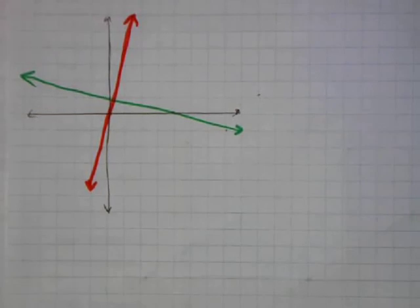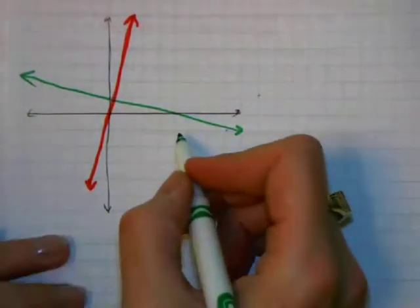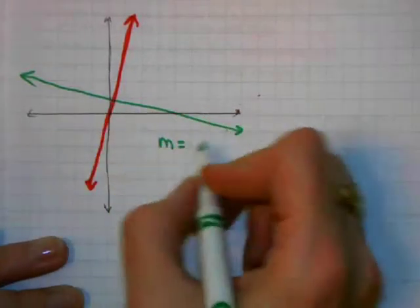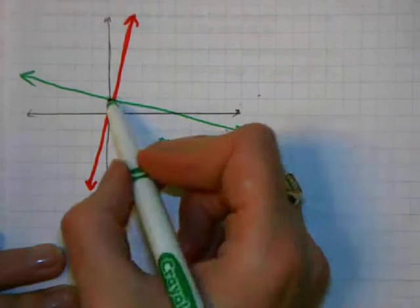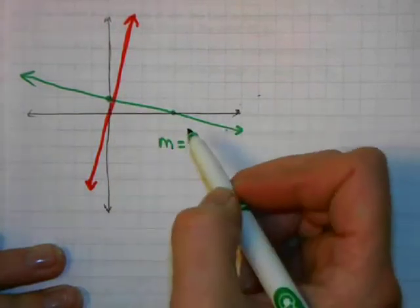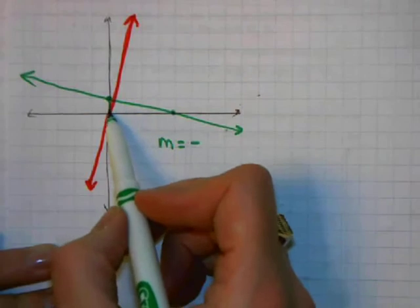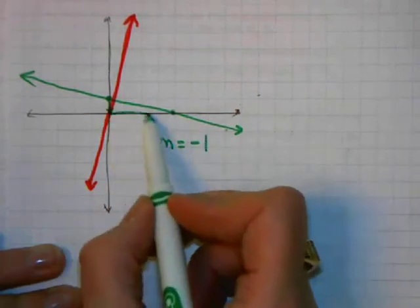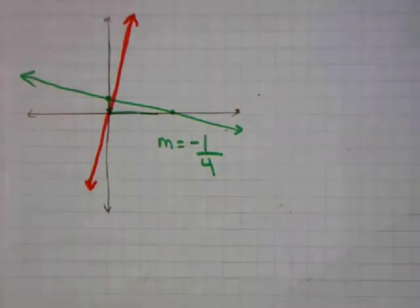Hopefully you've seen that if you draw two perpendicular lines, one of their slopes will be negative and one will be positive. Now let's look at the numerical values. Starting with the green line — we know its slope is negative, but negative how much? We need to know its rise and run. I pick two points: I go down 1 (that's where the negative comes from) and over 1, 2, 3, 4. So the slope of the green line is negative 1 over 4.